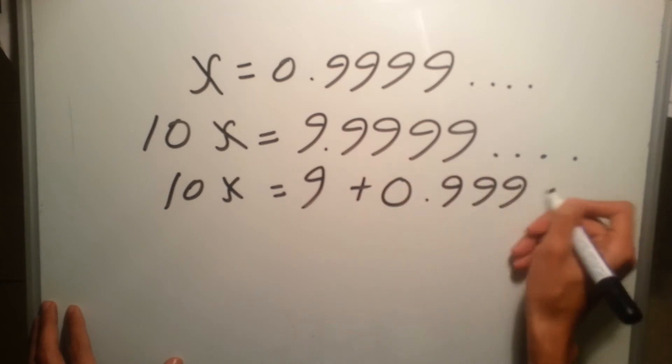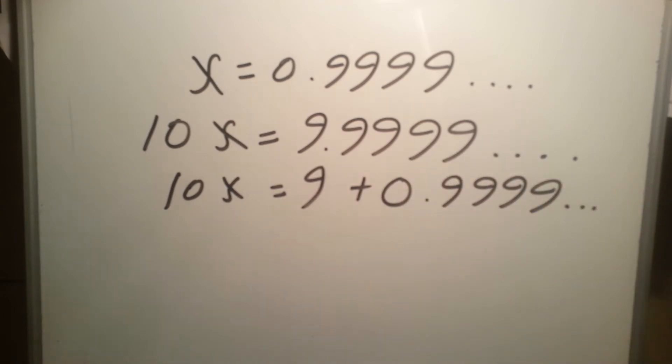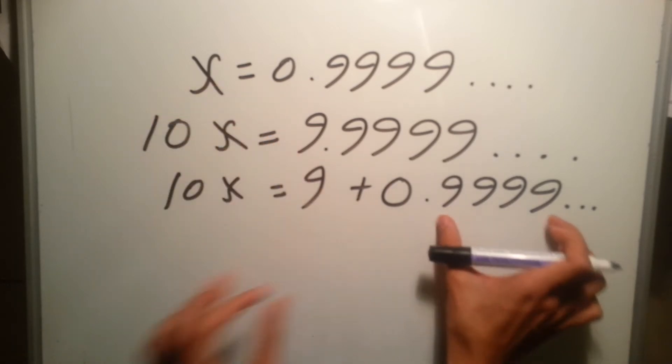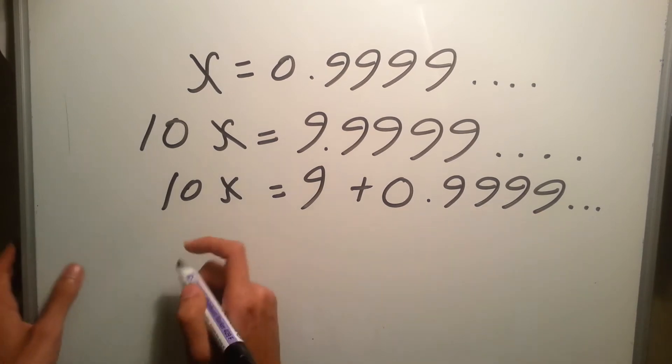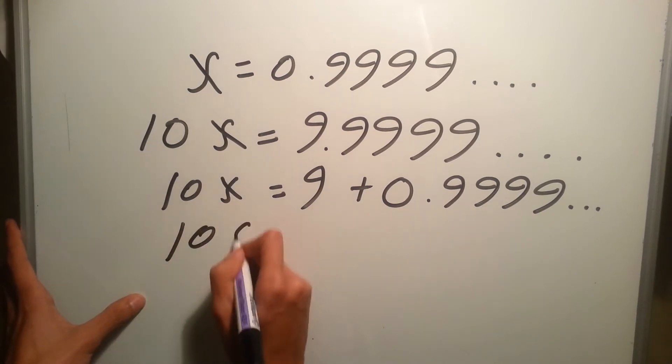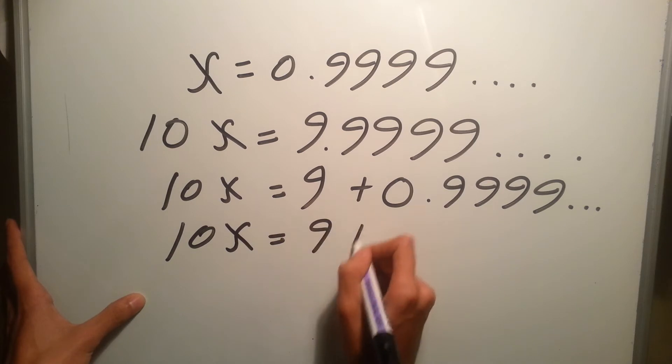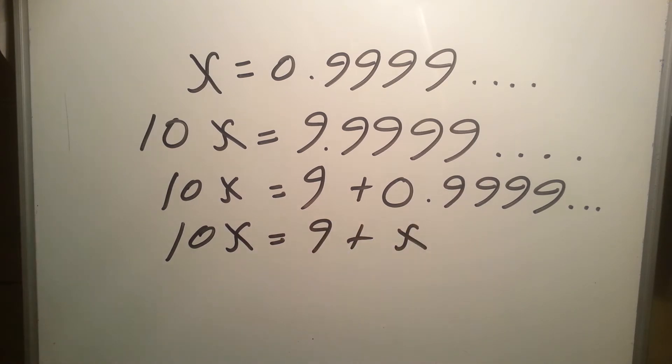And then we already know that 0.9999 up to infinity equals x, so we'll take this number and plug x instead. So 10x equals 9 plus x, and if you take x to the other side, you'll be left with 10x minus 9x, which equals 9.